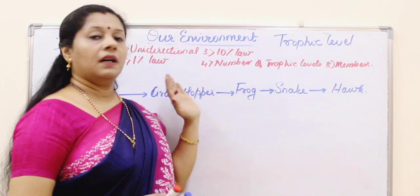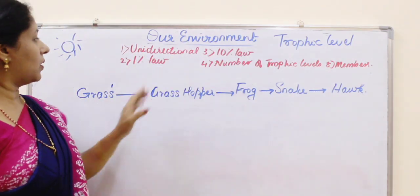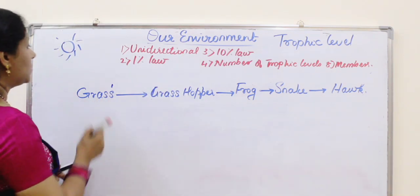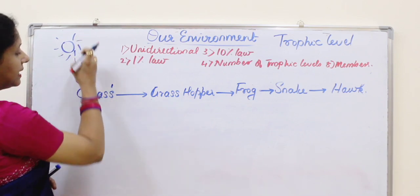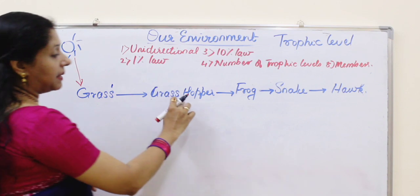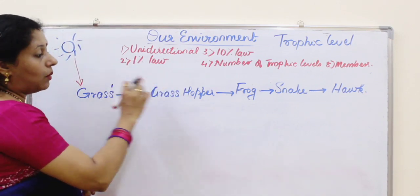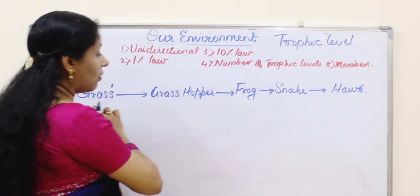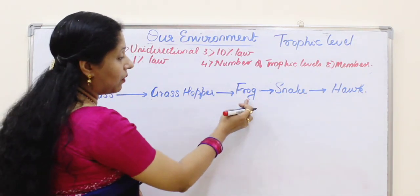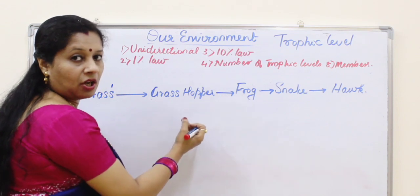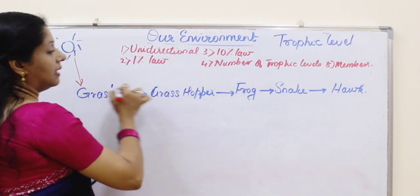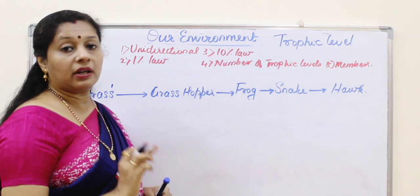A key characteristic of food chains is the unidirectional flow of energy. Only producers can prepare food using energy from the sun. Once light energy is captured by grass, photosynthesis occurs and that food is consumed by the grasshopper, then by the frog, and so on. Energy always flows from sun to plant to herbivore to carnivore — it can never flow backwards. That is why we say the flow of energy in a food chain is unidirectional.